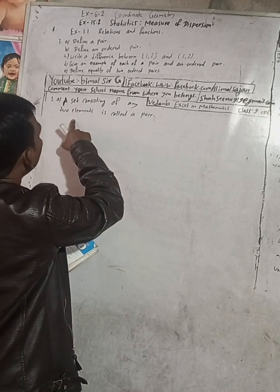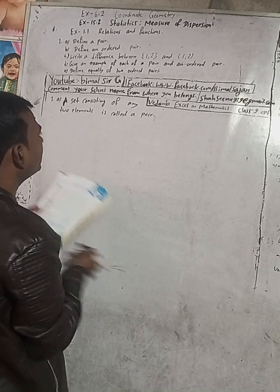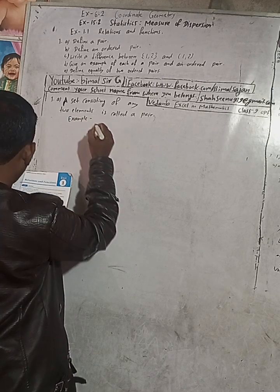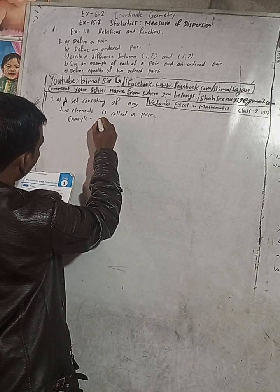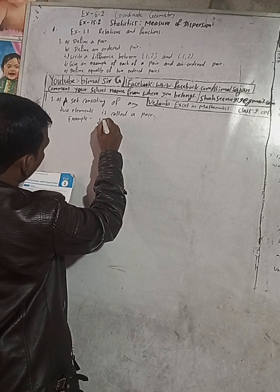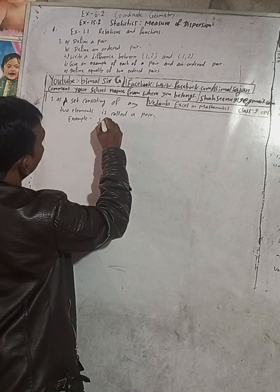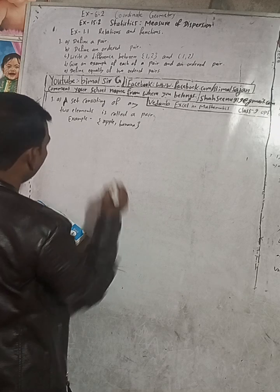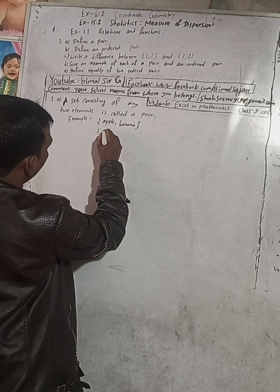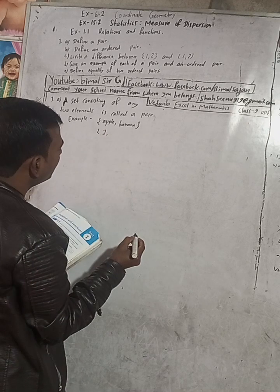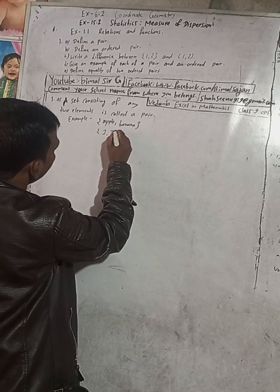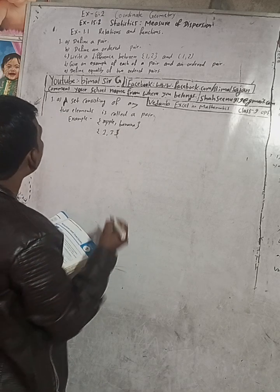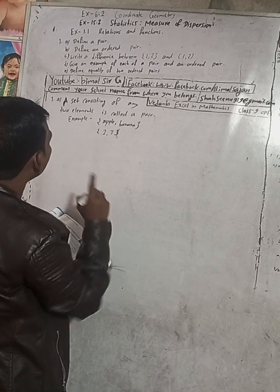And if you want, write an example. You can write here: {apple, banana} — these are basic fruits. You can also write another example: a prime number, like {2, 3}. This is a pair of prime numbers. This is the solution for question 1a.